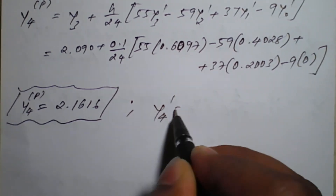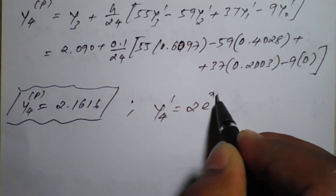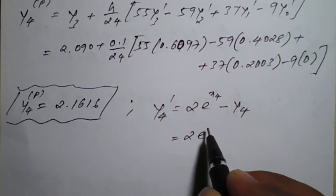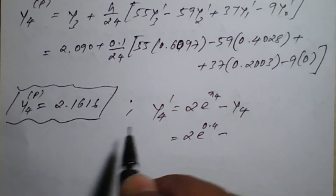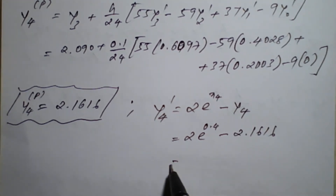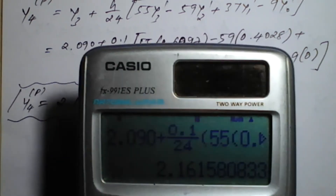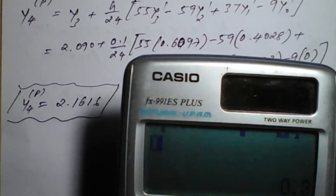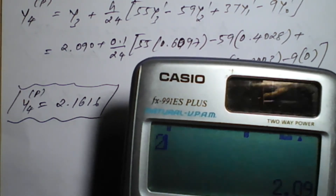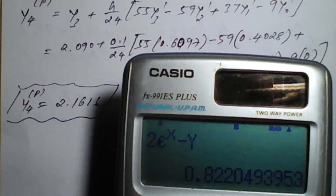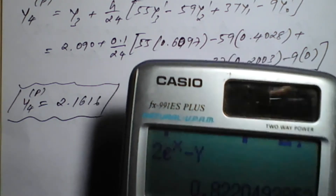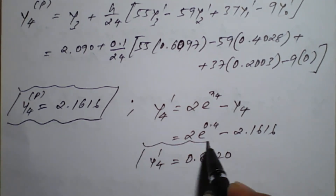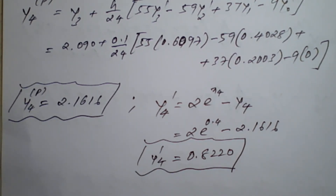With the predicted y4 = 2.1616, we now find y4'. That is y4' = 2·e^(x4) − y4 = 2·e^(0.4) − 2.1616. Using the calculator with x = 0.4 and y = 2.1616, the result is 0.82220. So we have both the predicted y4(P) and y4'.